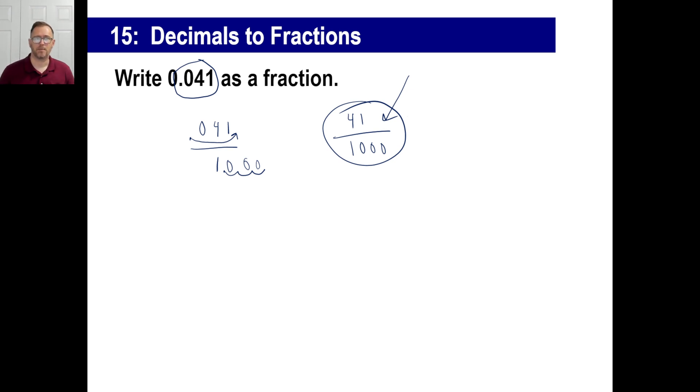So anyway, that's all you need to do. Make every decimal over a one, then move the decimals over until you get integers left. So for example, write this as a fraction. Well, it is a fraction already. 0.35 over one.